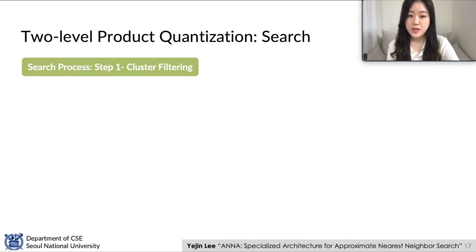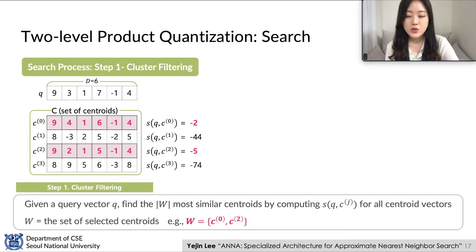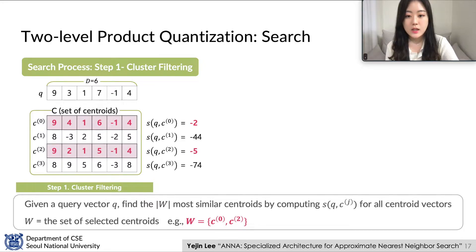The first step of the search process is cluster filtering. In this step, it computes the similarity between the query Q and all centroids, then finds the W most similar centroids. In this example, centroids 0 and 2 are selected as the most similar centroids, forming the set W. In the later search process, we only inspect encoded vectors in the selected clusters. Cluster filtering coarsely filters out encoded vectors that are unlikely to be similar to the given query, significantly reducing the amount of encoded vectors to inspect.